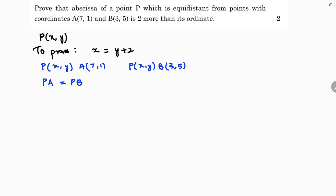Now the distance formula is: under root of (x2 minus x1) whole square plus (y2 minus y1) whole square.